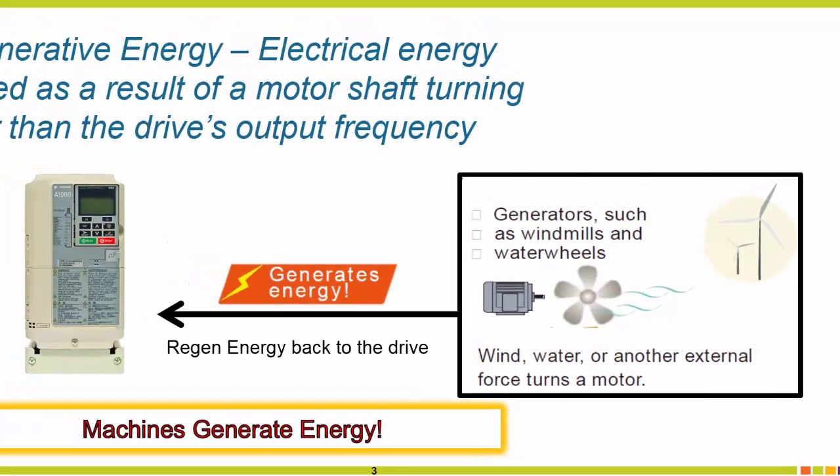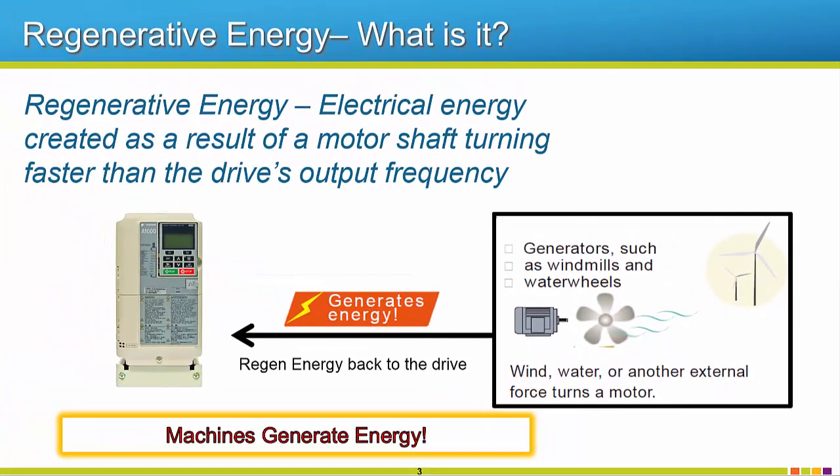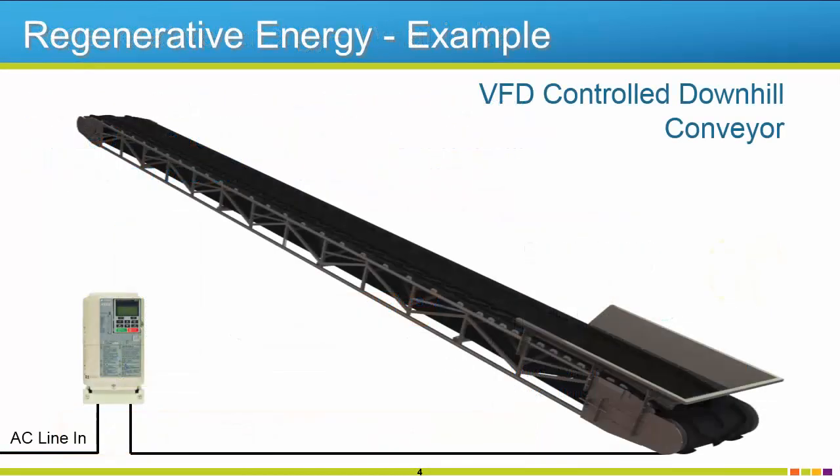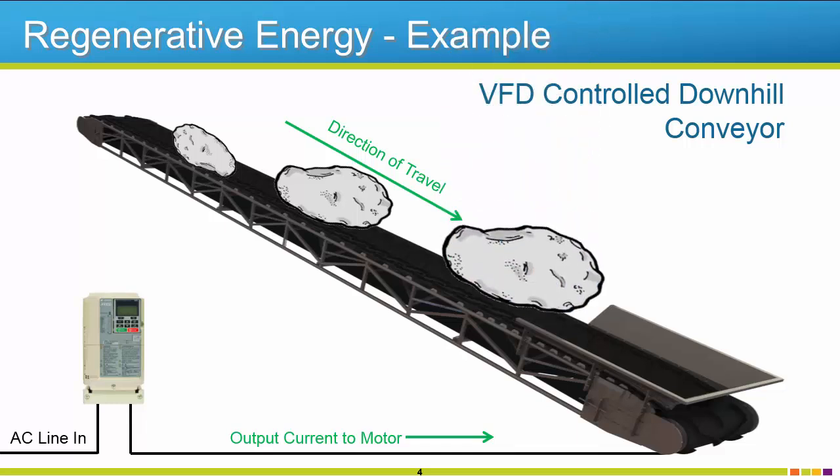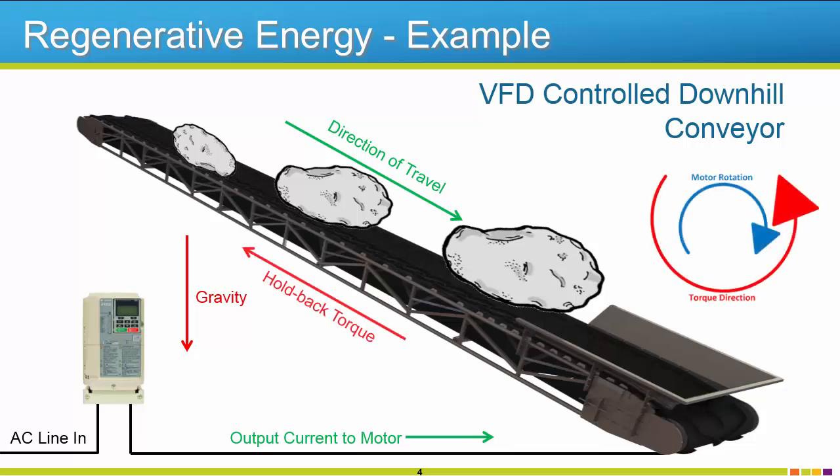Now you may be thinking, hey, my application generates energy? Great, so what happens to that energy? Where does it go? To answer that question, let's look at one more application example and discuss how regenerative energy can be a double-edged sword. Pretend we have a downhill conveyor with the drive running the motor on that conveyor. In this application, there is a lot of regenerative energy due to gravity on the product. The drive will command the motor to run at a certain speed and direction. This is the speed reference. Because of the weight of the product on the conveyor and the force of gravity, the conveyor will naturally want to accelerate downhill without the need for the drive to perform any work. When the conveyor starts to run faster due to gravity and the load, the motor must hold the load back to maintain the commanded speed reference. This is called hold back torque.